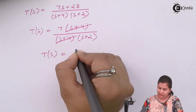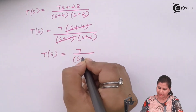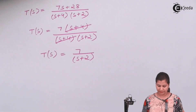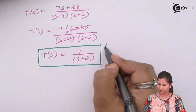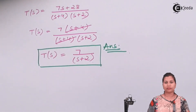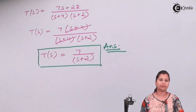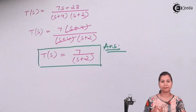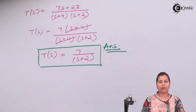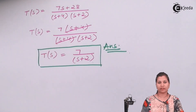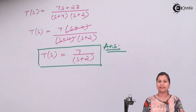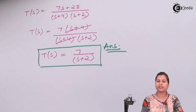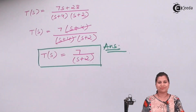The resultant transfer function comes out to be 7/(s+2). So this is our answer. Using the state model we have derived the transfer function using the formula C(sI - A)^{-1}B + D. We had the values of the A, B, C, D matrices from the given state model, calculated (sI - A)^{-1}, substituted all values, and calculated the transfer function of the system. I hope this problem is clear to you. Thank you.